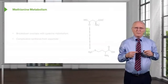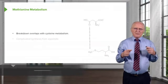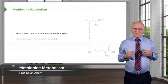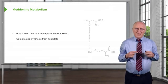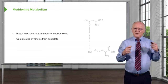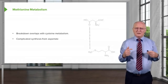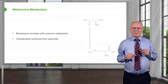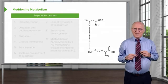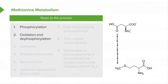Methionine metabolism is kind of complicated as we study it coming from aspartic acid. The breakdown of methionine actually overlaps with cysteine metabolism. The complicated synthesis that comes from aspartate I show here with a set of arrows. In the other lectures where I've talked about vitamin B12 metabolism, I actually showed those seven reactions, so I'm not going to show them again here. Suffice it to say there are seven chemical steps: a phosphorylation, an oxidation that accompanies a dephosphorylation, and another oxidation.